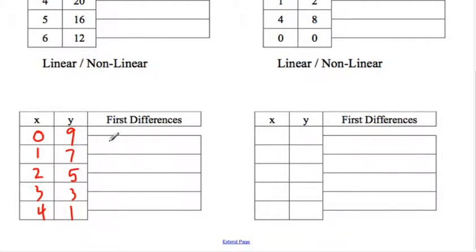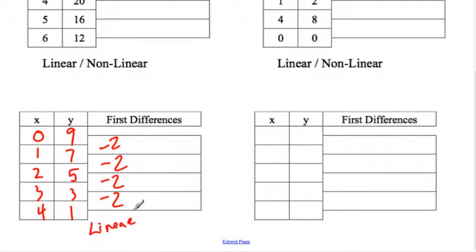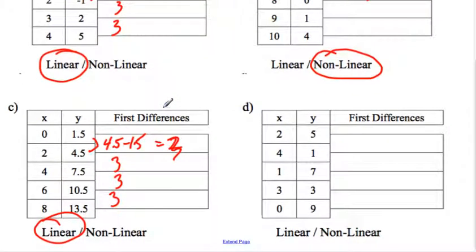7 subtract 9 is negative 2. 5 subtract 7 is negative 2. 3 subtract 5 is negative 2. 1 subtract 3 is negative 2. All the first differences are the same, so this is linear. There was no point doing first differences on the original unordered table, but after reordering it's confirmed linear.